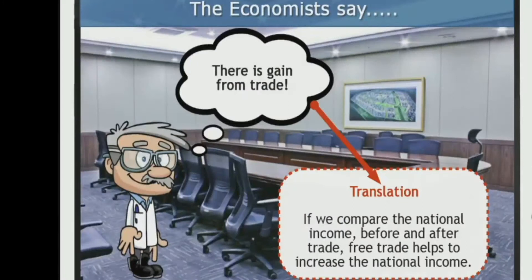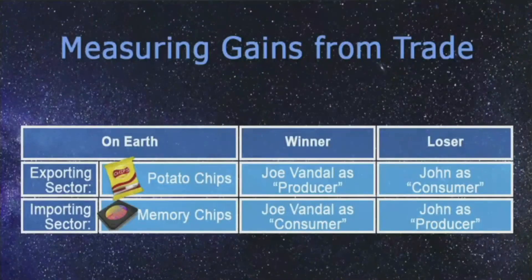When economists say there is a gain from trade, what they really mean is: if we compare the national income — in this case, Joe's plus John's — before and after trade, free trade helps to increase the national income. For instance, producers in a country's exporting sector record a gain. Joe receives a higher price from selling his potato chips to Martians. But it doesn't mean everyone's income will go up.